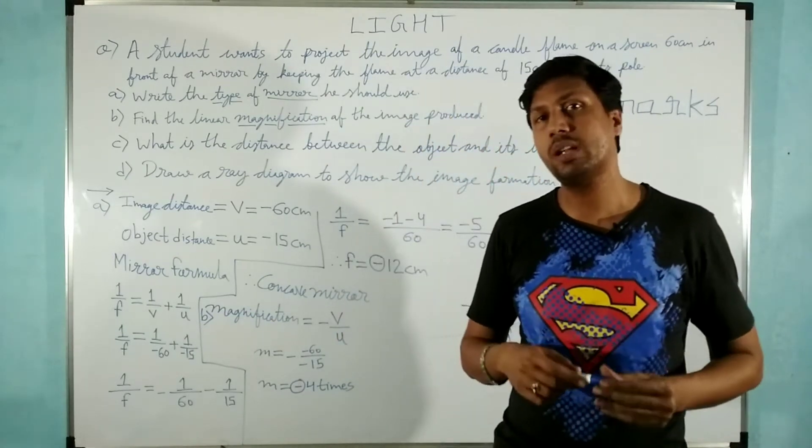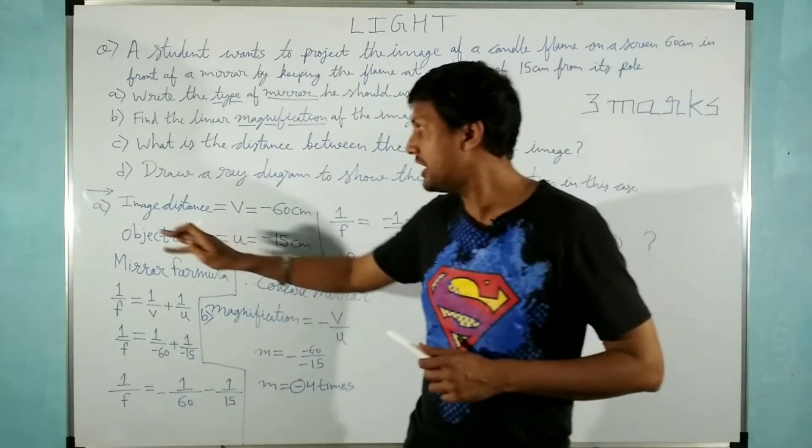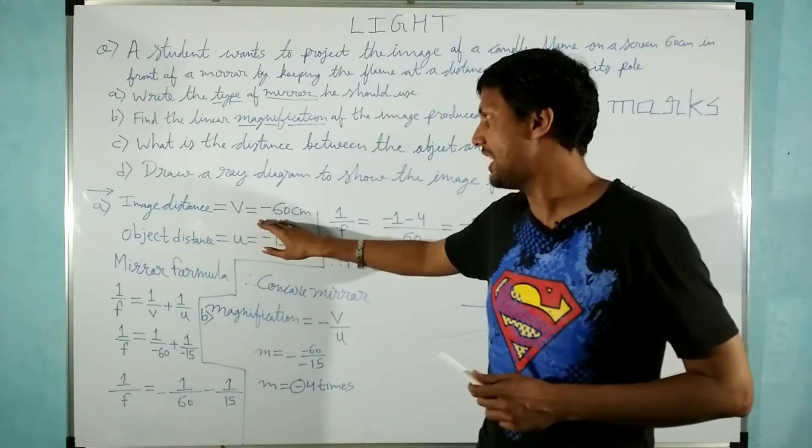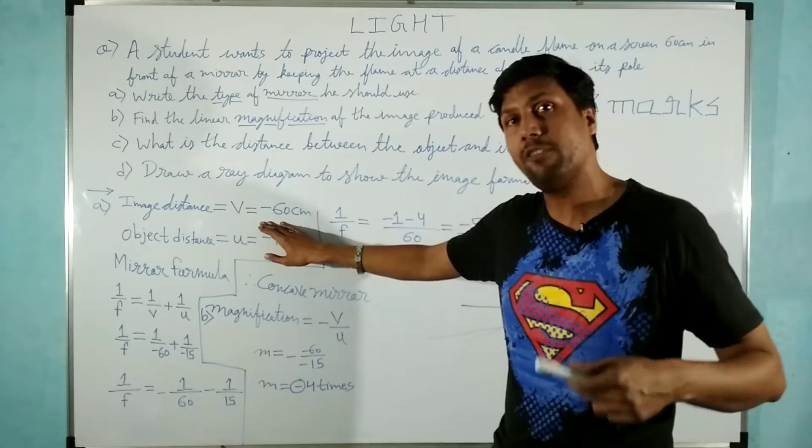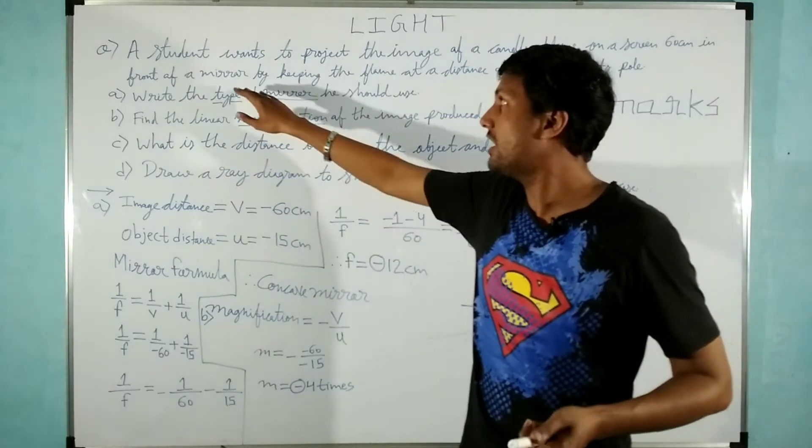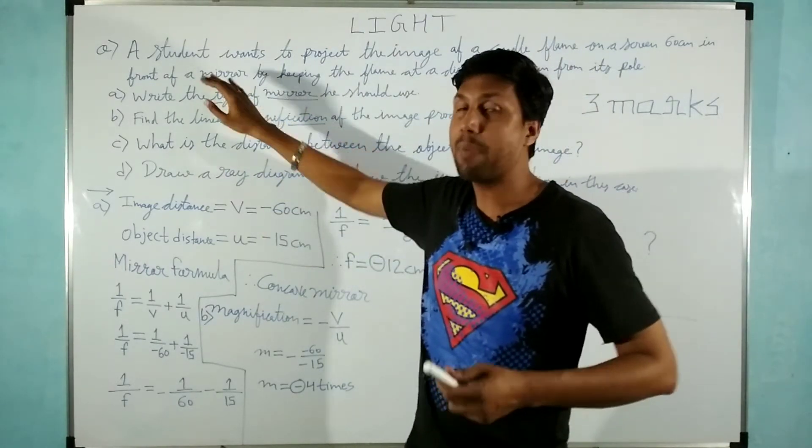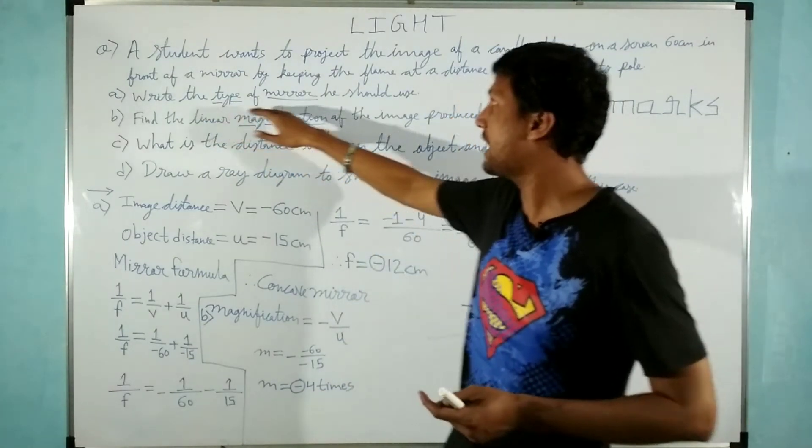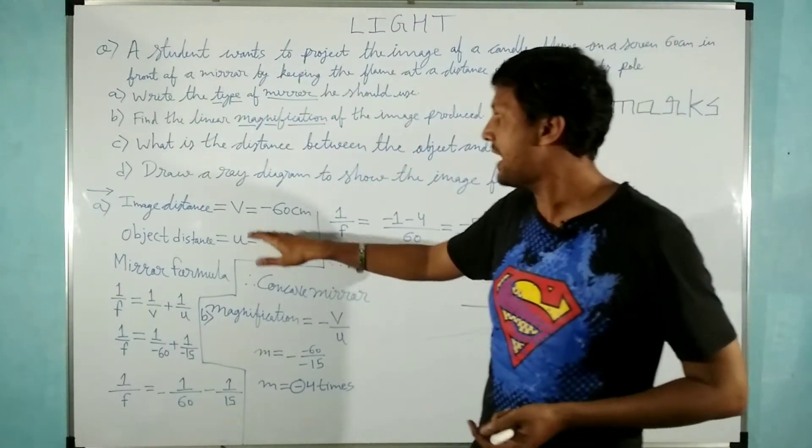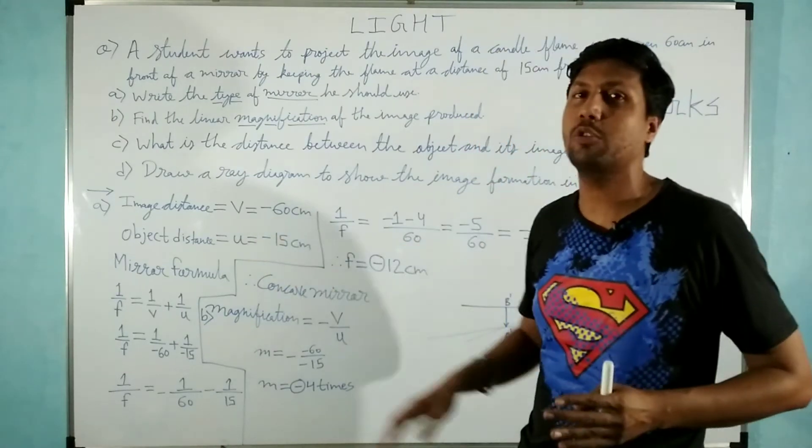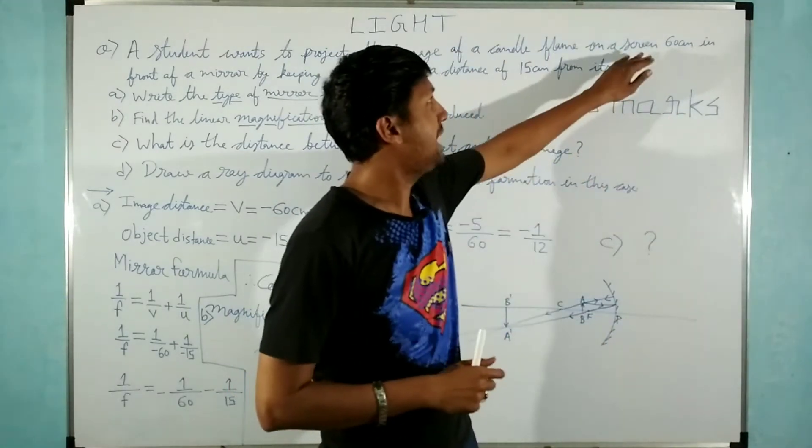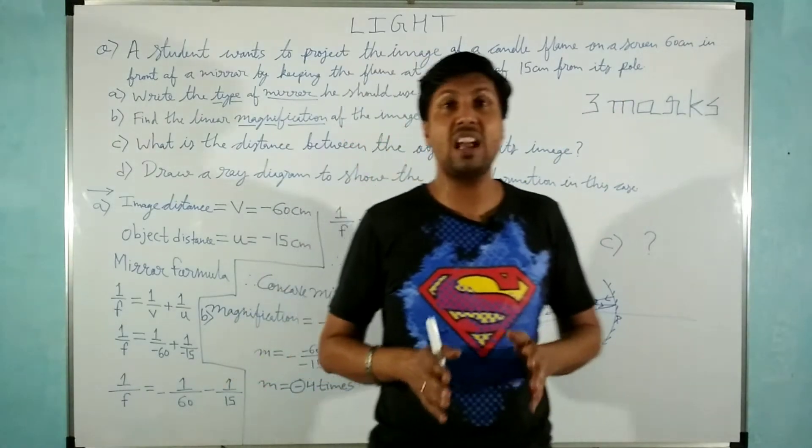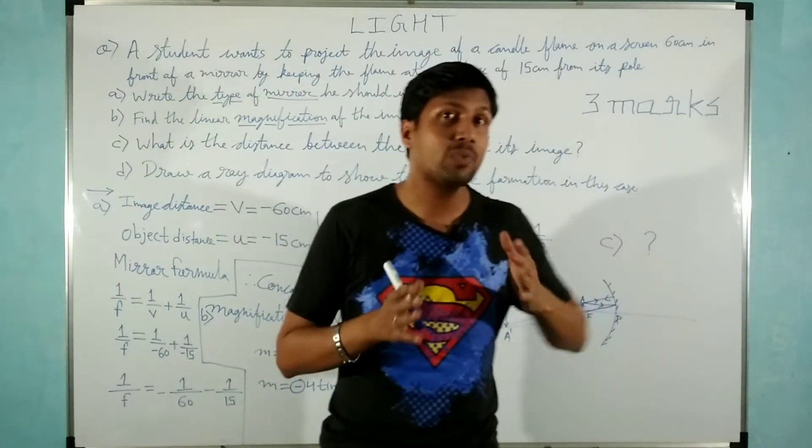First of all always jot down what is given. So what is given here, image distance V is given and V is in negative. Now dear friends why I have already taken negative, wherever here we don't know which kind of mirror it is. We have to obtain the image on a screen.